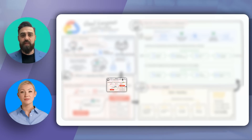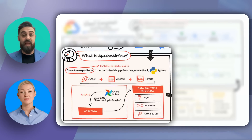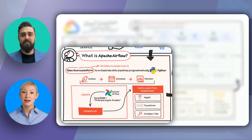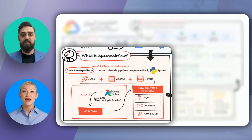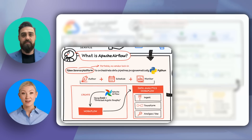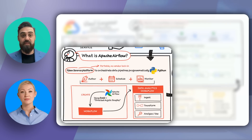Now we've heard Apache Airflow mentioned. What is Apache Airflow and why is it important? Apache Airflow is an open source platform used to programmatically author, schedule and monitor workflows. It's highly versatile, allowing you to create complex data workflows with Python code. So it acts as the backbone of Cloud Composer, providing the core functionality.